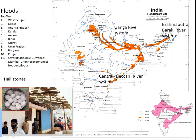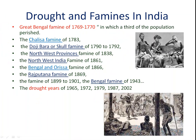Droughts and famines in India also need attention. Under human-induced famines, the Bengal famine saw a third of the population perish — people were reduced to skeletons. Looking at drought years from 1965 onward, so many droughts and famines have occurred across India.